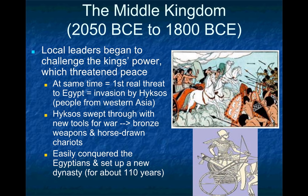The Middle Kingdom declined because it was invaded by outsiders. The most significant invaders were the Hyksos, a pastoral and nomadic people from what is now Syria. The Hyksos successfully defeated the Egyptians because they had superior military technology — horse-drawn chariots and improved bows and arrows. Despite not having a centralized government like the Egyptians, they were able to conquer them. But eventually the Egyptians adapted the very technology the Hyksos used to defeat them, which would later make their own empire more powerful.